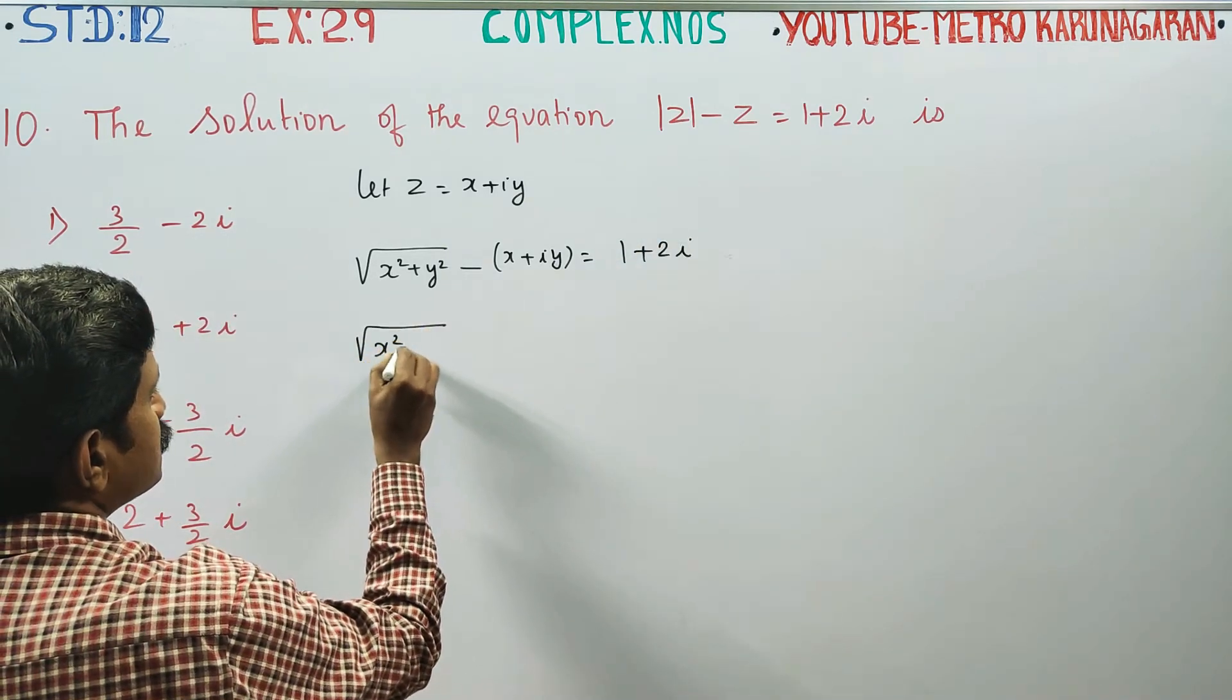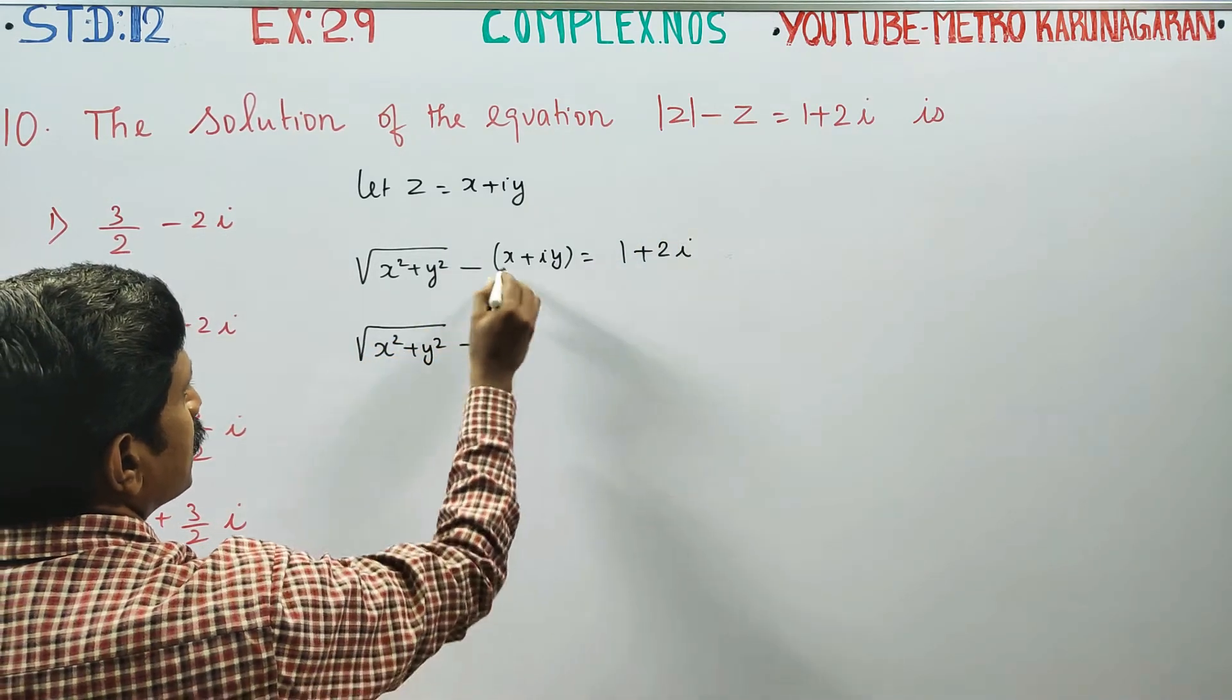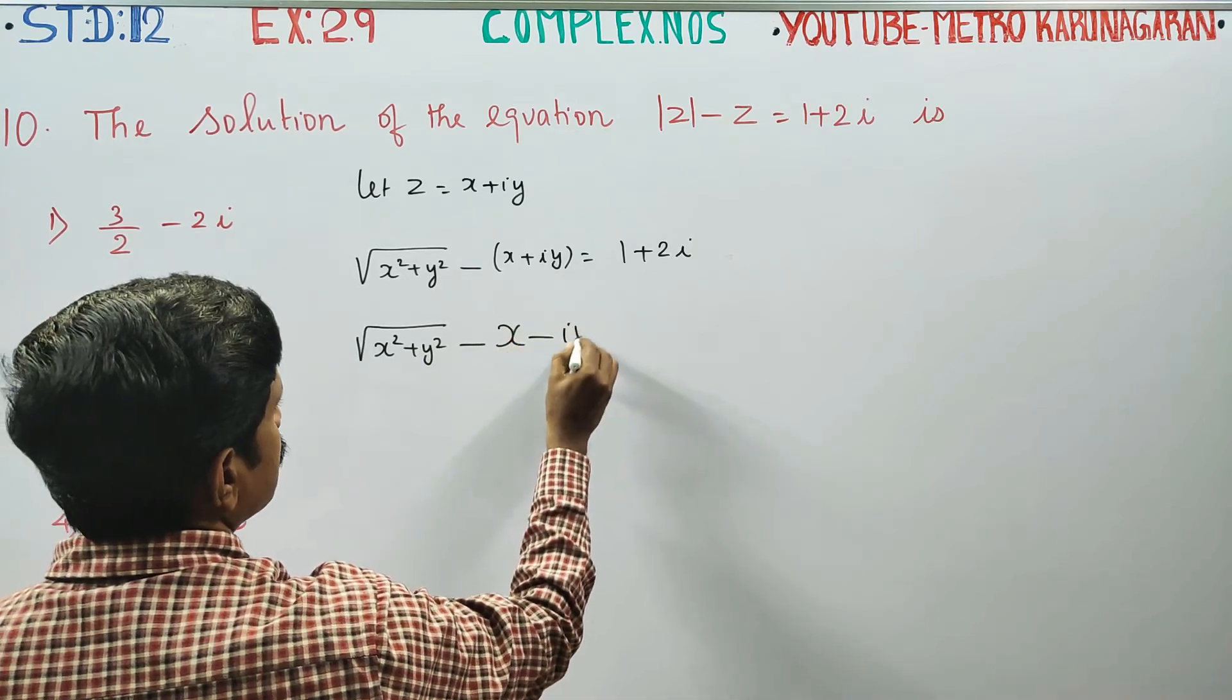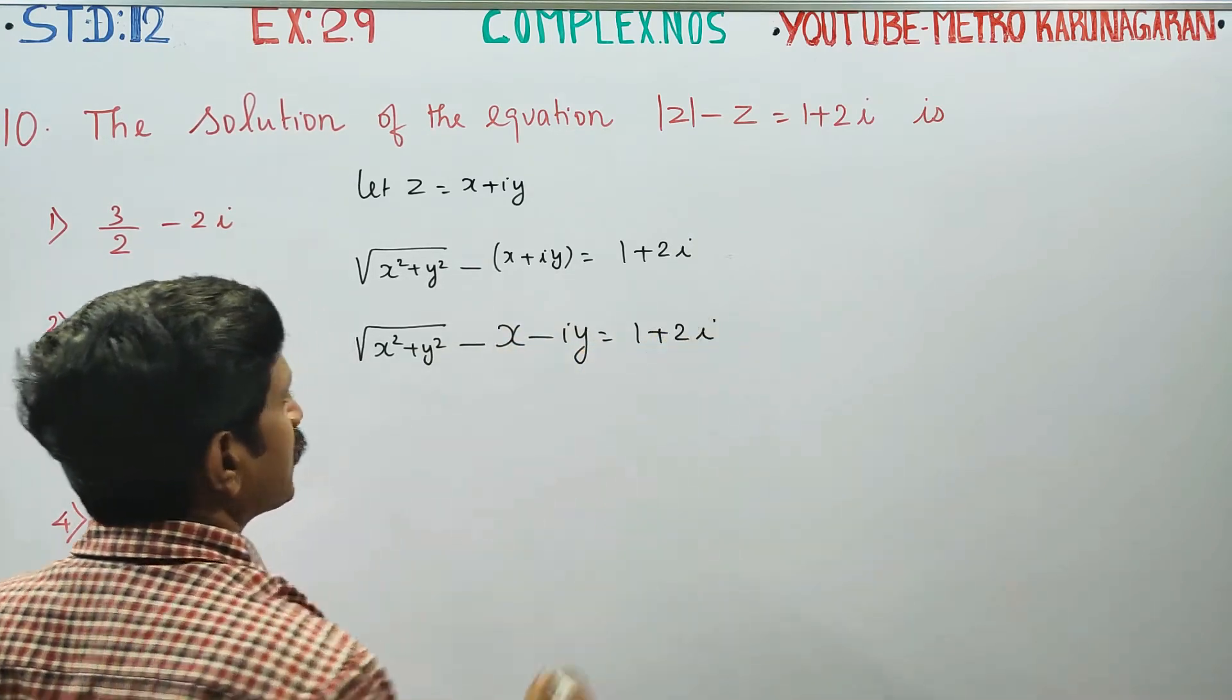Square root of x square plus y square minus x minus iy is equal to 1 plus 2i.